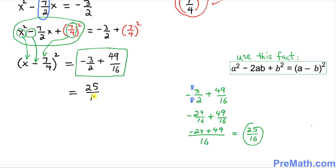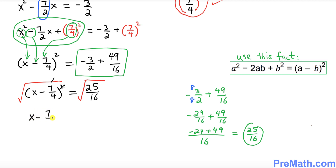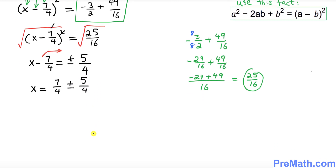So we have X minus 7 over 4 squared equals 25 over 16. To solve for X, take the square root of both sides. The square and square root undo each other, giving X minus 7 over 4 equals plus or minus 5 over 4. Then isolate X by adding 7 over 4 to both sides: X equals 7 over 4 plus or minus 5 over 4.